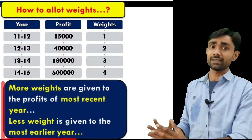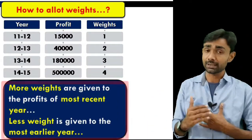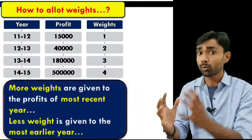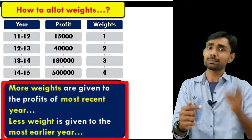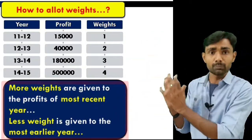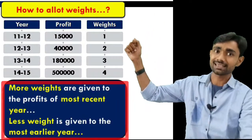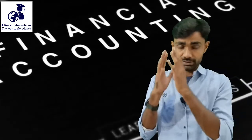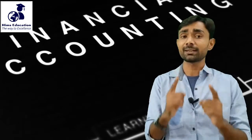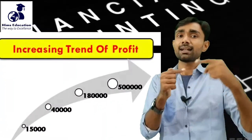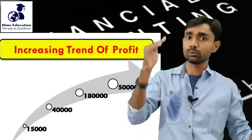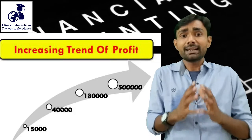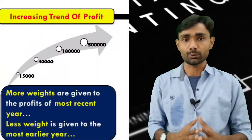The recent year is the last year. For example, if we are calculating in 2017-18 and have details from 2010-11 to 2015-16, the last year 2015-16 is the most recent and gets the highest weight. The earliest year gets the least weight. The condition for using weighted average profit is that every year's profit is growing — first year to second year profit increases, second to third it increases further — profit will keep showing an increasing trend.